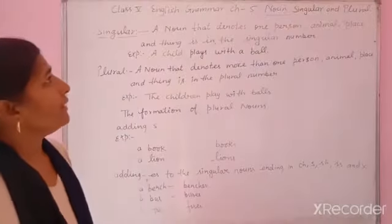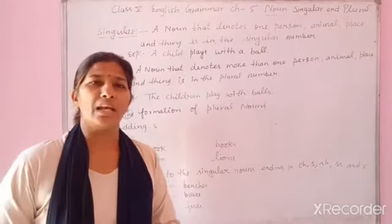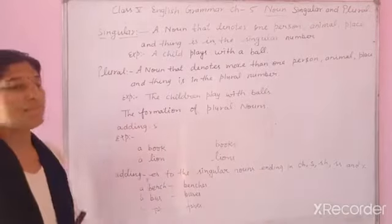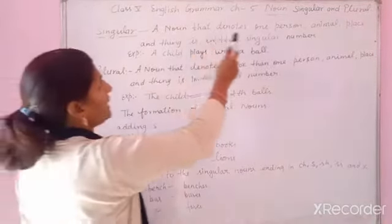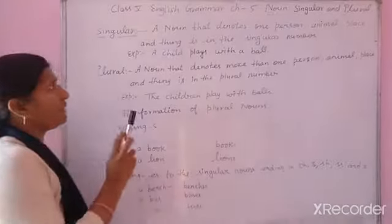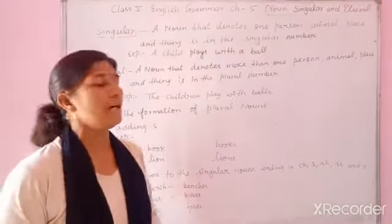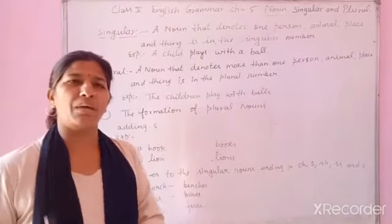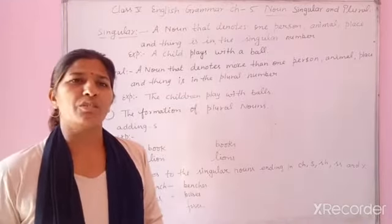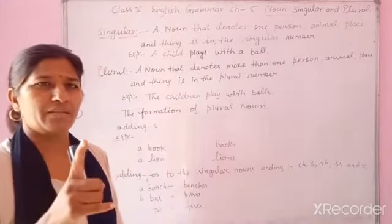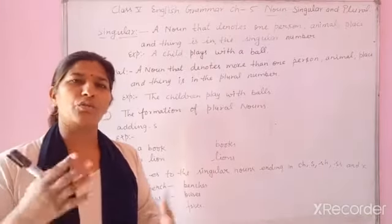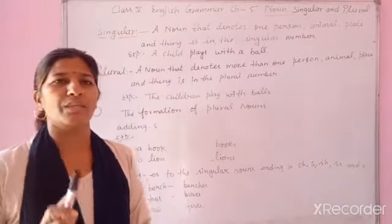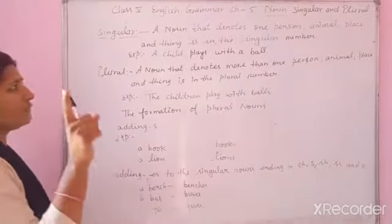Today we will revise noun — singular and plural. What is singular? A noun that denotes one person, animal, place, or something is in the singular number. A single number means one person, one animal, one place — it means one.